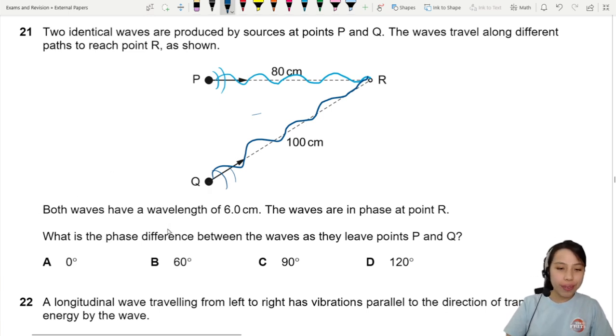Both waves have a wavelength of 6 cm and they are in phase when they reach point R. Eventually they will reach and overlap at a point. In phase, interesting. What is the phase difference between the waves as they leave points P and Q?